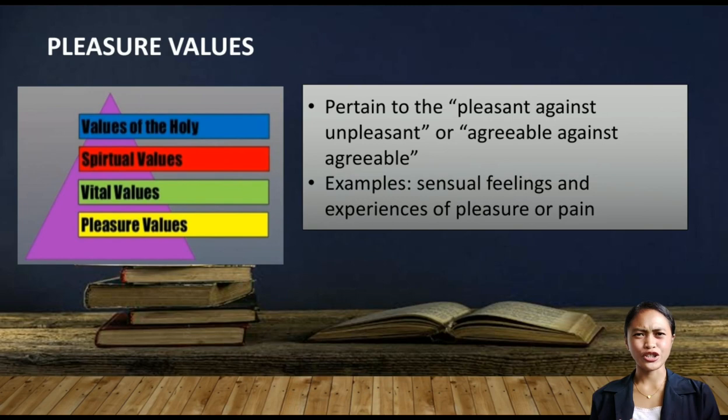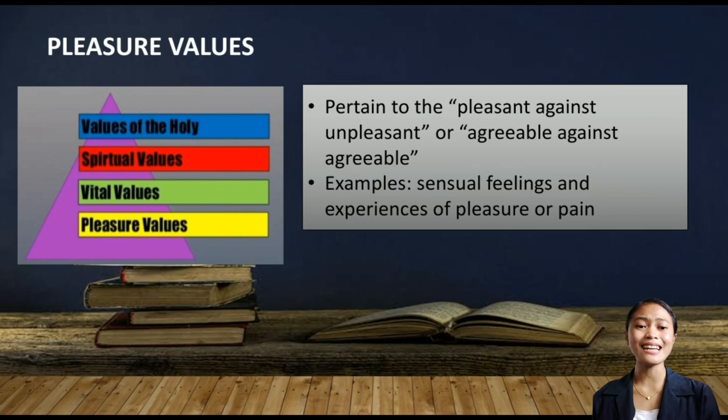Now let's proceed to Max Scheler's hierarchy of values. Let's start with pleasure values. From the word pleasure, it means a feeling of satisfaction. Pleasure values pertain to the pleasant versus unpleasant, or agreeable against disagreeable. Examples of pleasure values are sensual feelings and experiences of pleasure or pain.